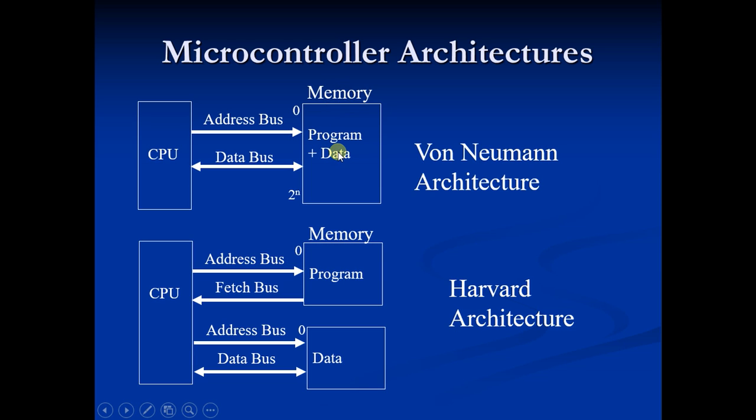For storing data as well as program, the processor needs two clock cycles to complete an instruction. Pipelining the instruction is not possible with this architecture.